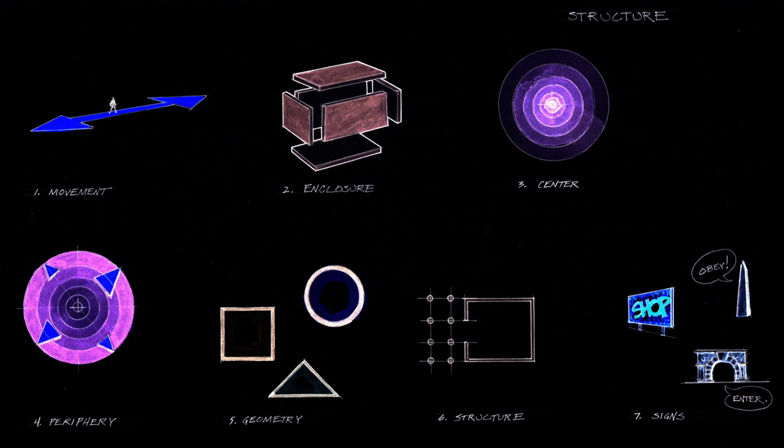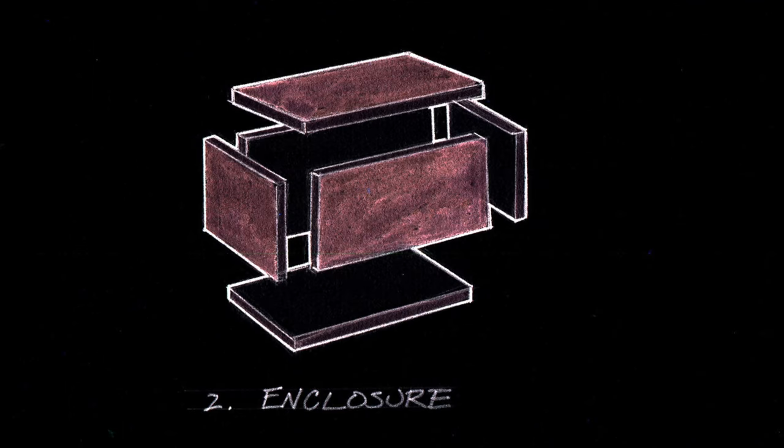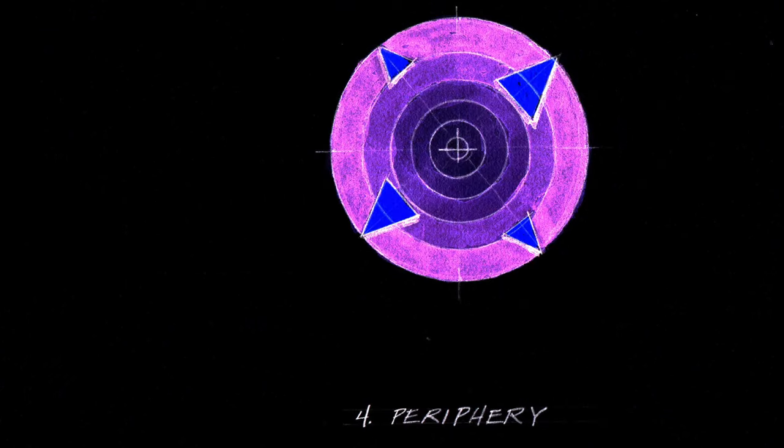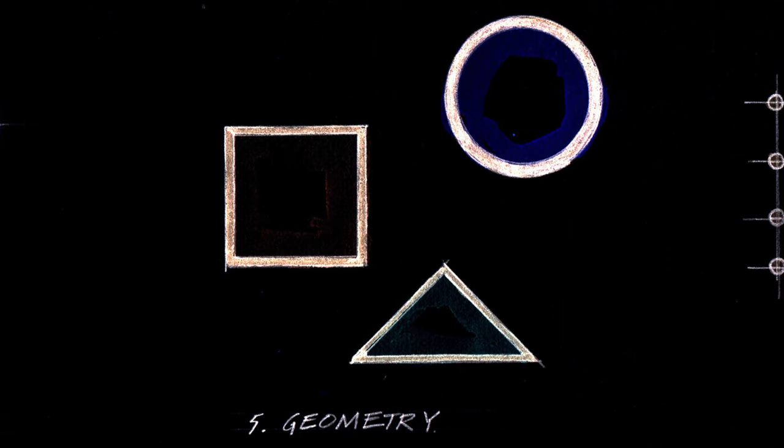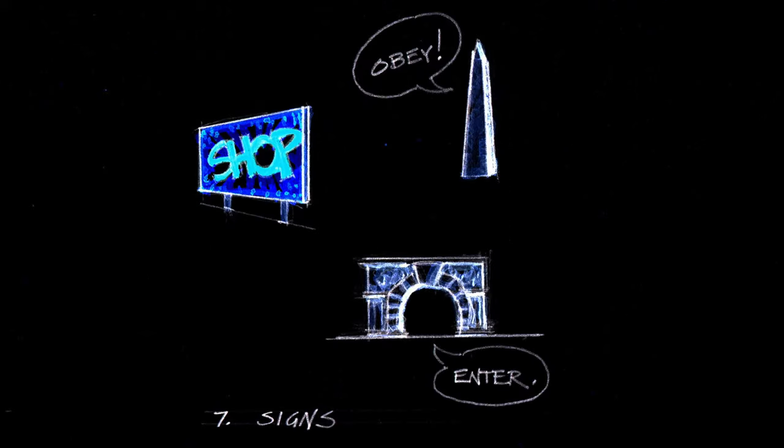Structured spaces. Space can be created or structured through several different elements. Movement can structure space, how a person experiences space over time. Enclosure can structure space. The walls, roof, platforms, and other enclosing elements can be used to structure space. Creation of a clear center can be used to structure space. Conversely, creation of a clear periphery can also be used to structure space. Formal geometry can be used to structure space. Structural elements like columns or walls can help structure a space. Signs that communicate ideas and concepts can be used to structure space.